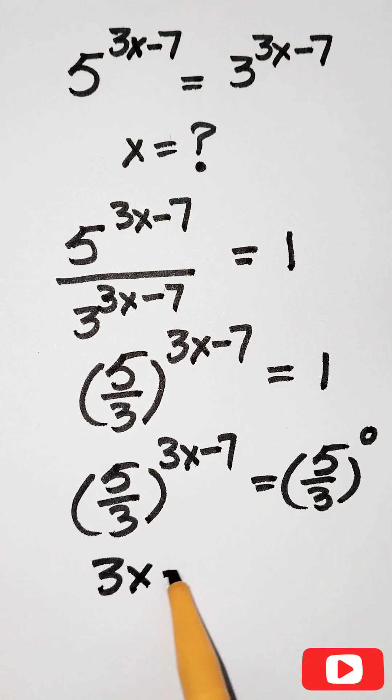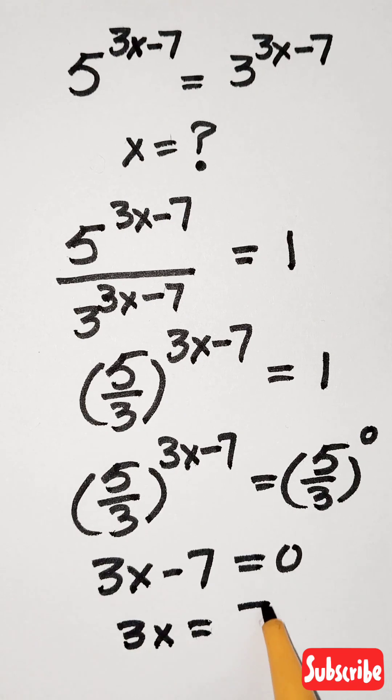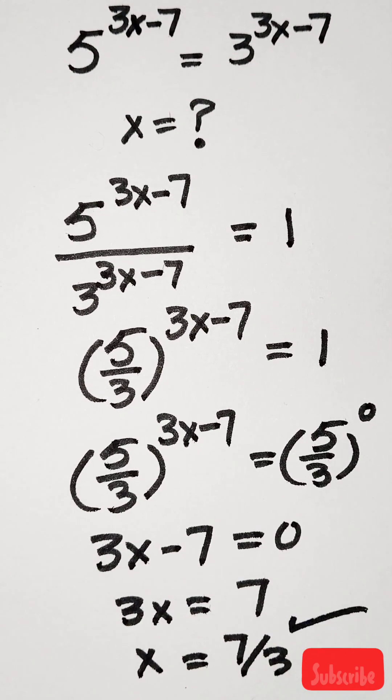So 3x minus 7 equals 0, which means 3x equals 7, and x equals 7 over 3. That's our final answer.